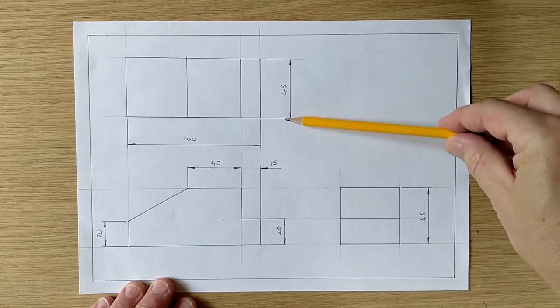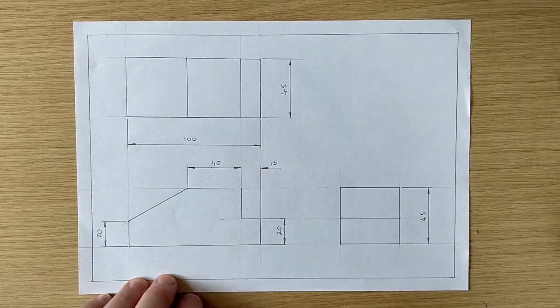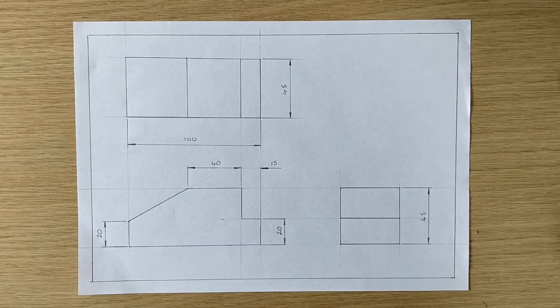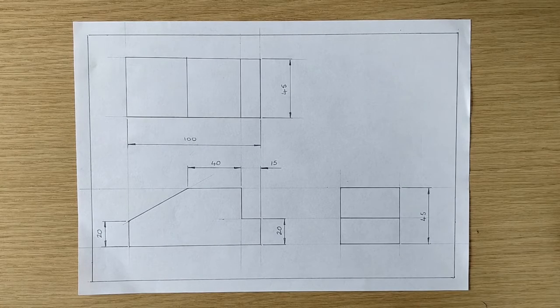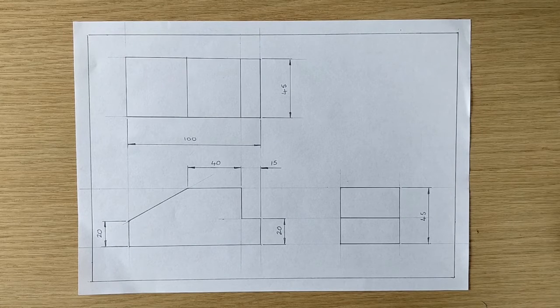Each dimension only appears once. That 45 there is the height of the block whereas that one is the width. And we would expect no problems with somebody taking those measurements and making the block for us. And that is the aim of a working drawing, is to avoid any misunderstandings and errors.